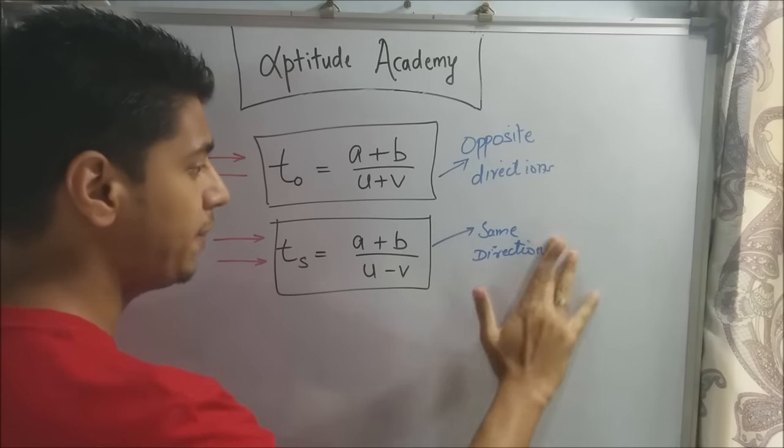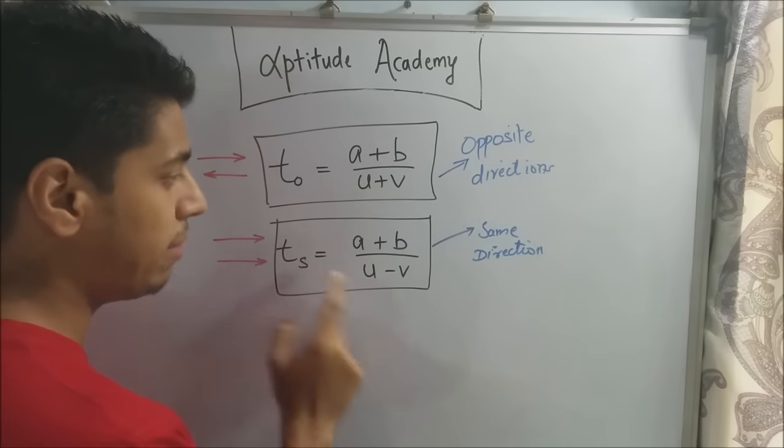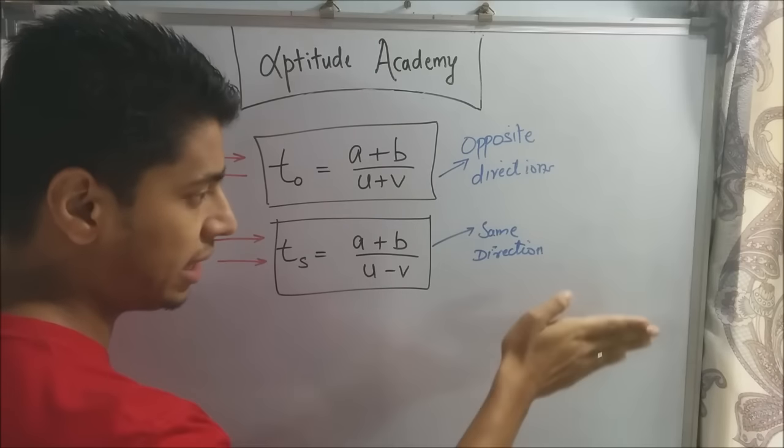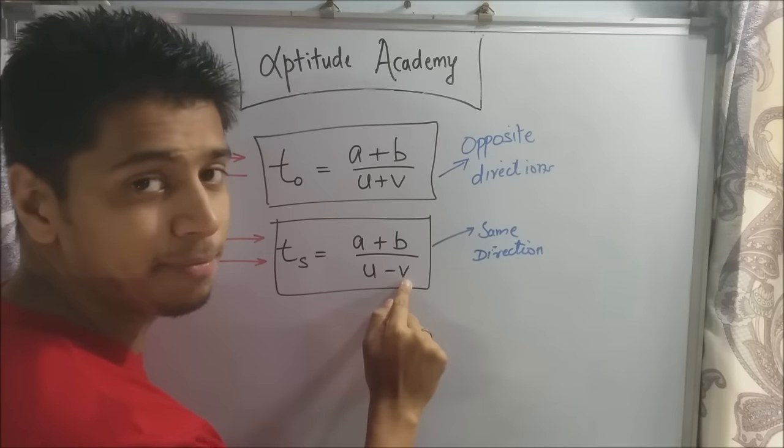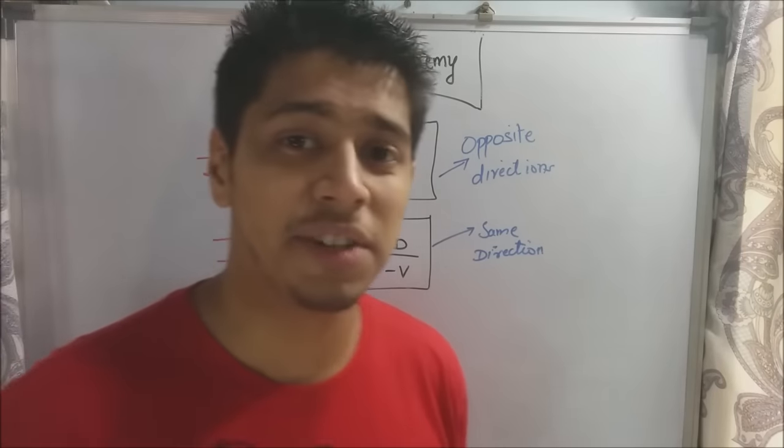Now if they are moving in the same direction then the time required for them to cross, that is the faster train to overtake the slower train, will be a plus b divided by u minus v. Easy right? Let's start with the first problem.